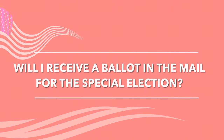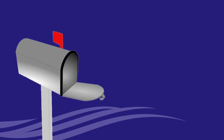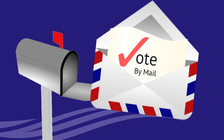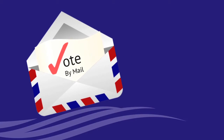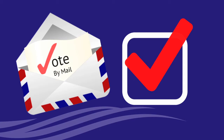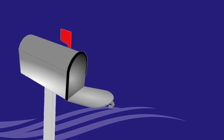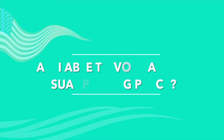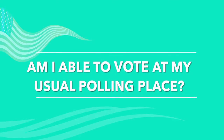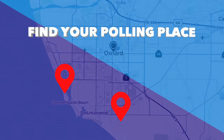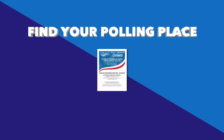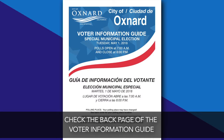If you already automatically receive a ballot in the mail each election season without requesting one, that means you are a permanent vote-by-mail voter, and you will receive a ballot in the mail for this election as well. Your polling place may be different from the polling place you went to for the last election. It's important that you check the back page of your voter information guide to find your assigned polling location for this election.